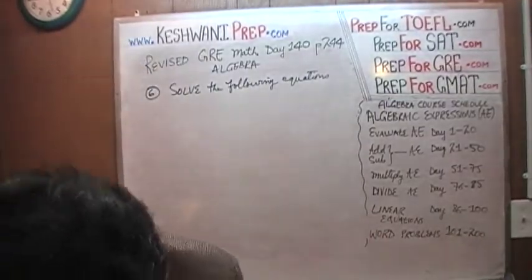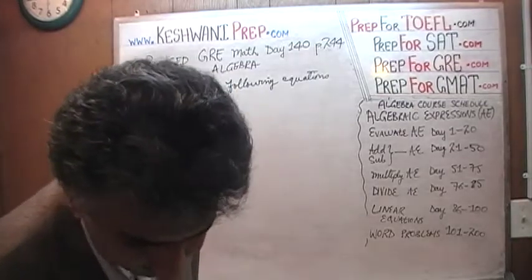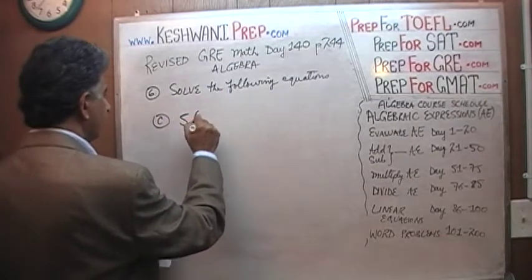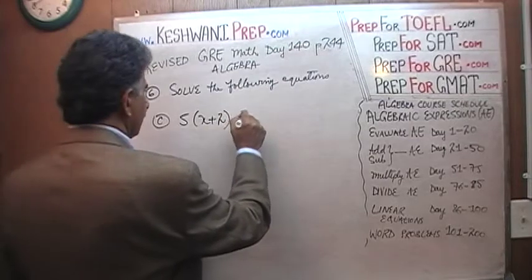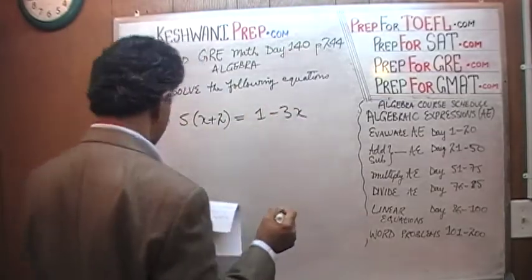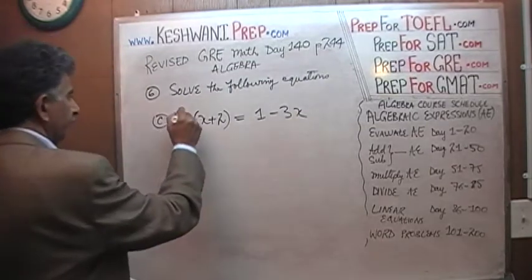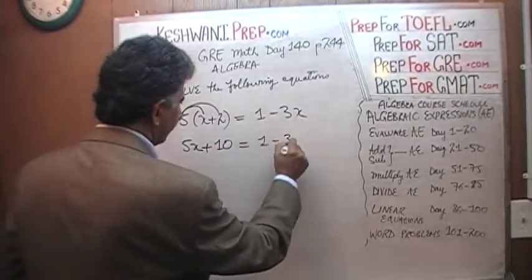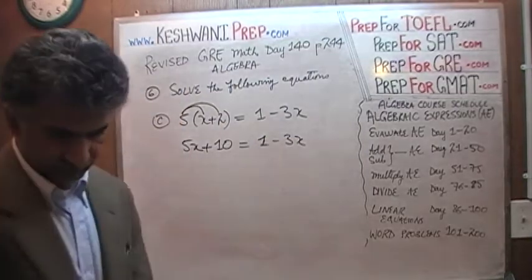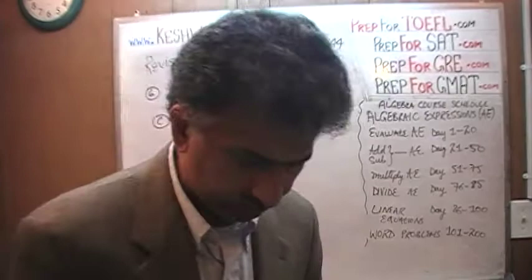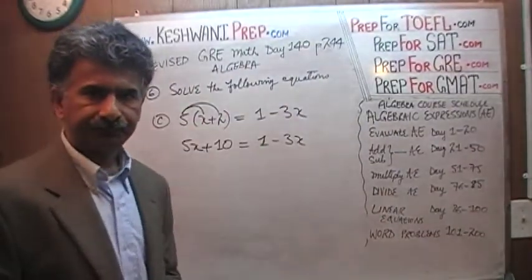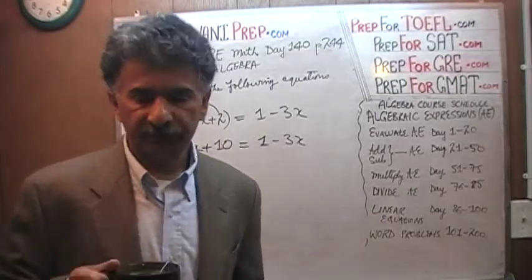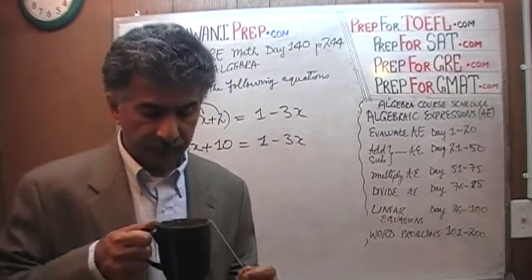Let's do the next one — C. 5 times (x plus 2) equals 1 minus 3x. Let's open the parenthesis: 5 times x is 5x, and 5 times 2 is 10, so we have 5x plus 10 equals 1 minus 3x. We can bring all the unknown quantities to the left-hand side — there is only one unknown quantity in this equation, which is x, but if we had more than one we would bring everything to the left-hand side.